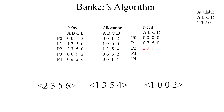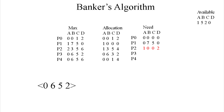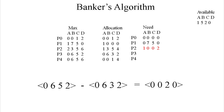And we go ahead and grab the next one, which is 0, 6, 5, 2, and we're subtracting 0, 6, 3, 2 from it. We end up with 0, 0, 2, 0.